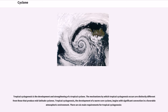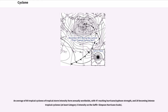Tropical cyclogenesis is the development and strengthening of a tropical cyclone. The mechanisms by which tropical cyclogenesis occurs are distinctly different from those that produce mid-latitude cyclones. The development of a warm core cyclone begins with significant convection in a favorable atmospheric environment. There are six main requirements for tropical cyclogenesis. An average of 86 tropical cyclones of tropical storm intensity form annually worldwide, with 47 reaching hurricane/typhoon strength, and 20 becoming intense tropical cyclones, at least Category 3 intensity on the Saffir-Simpson hurricane scale.